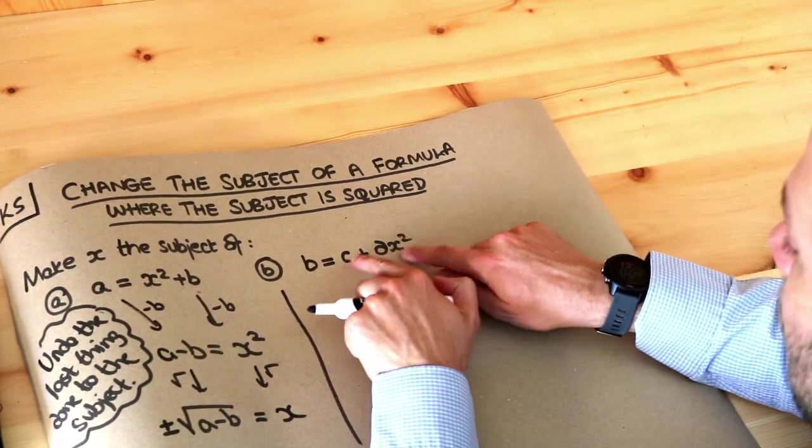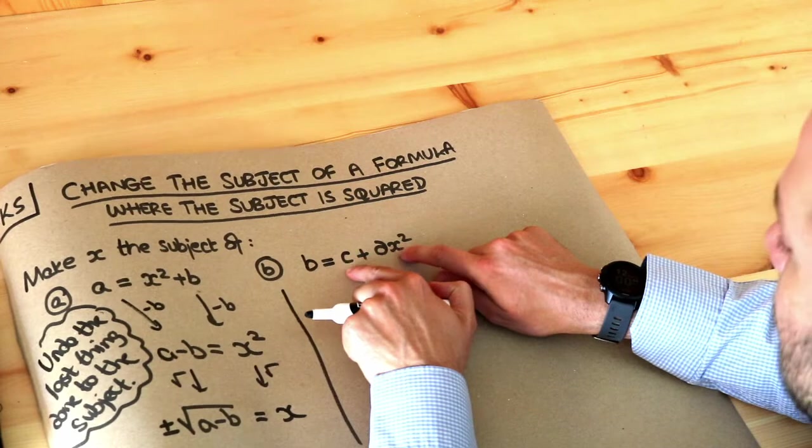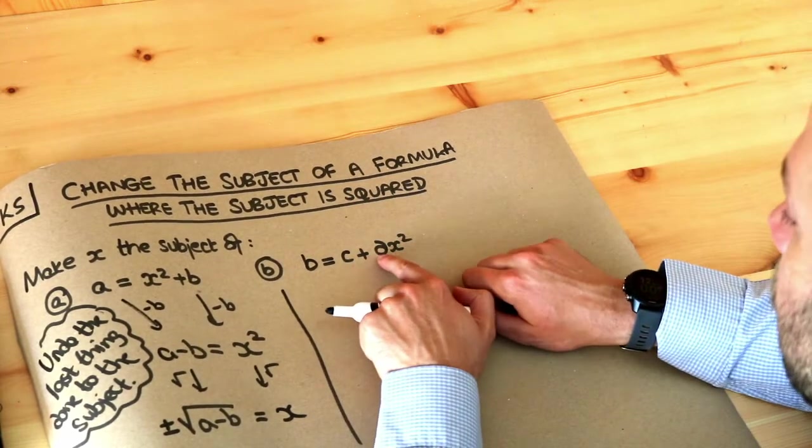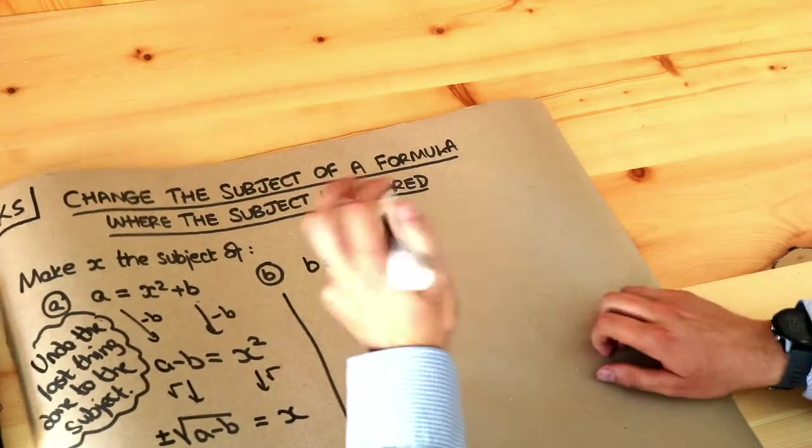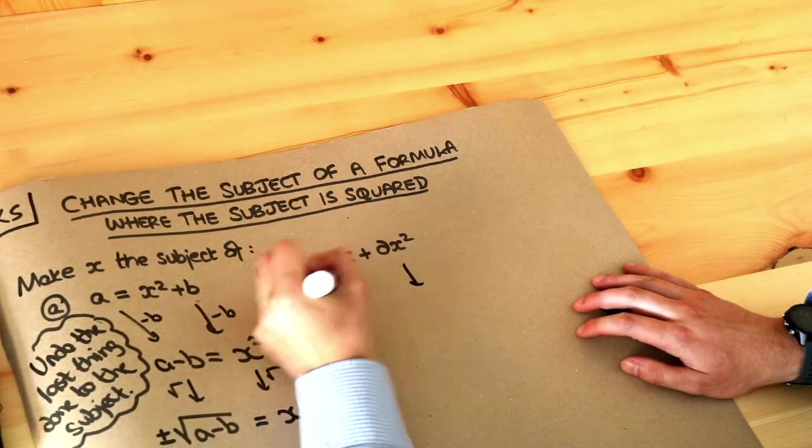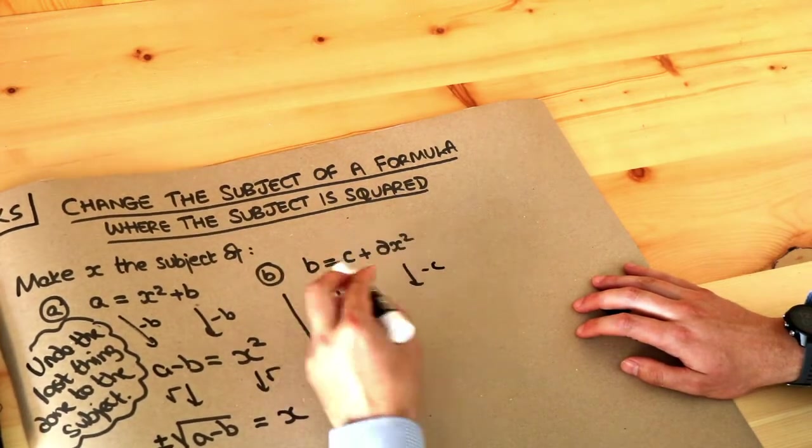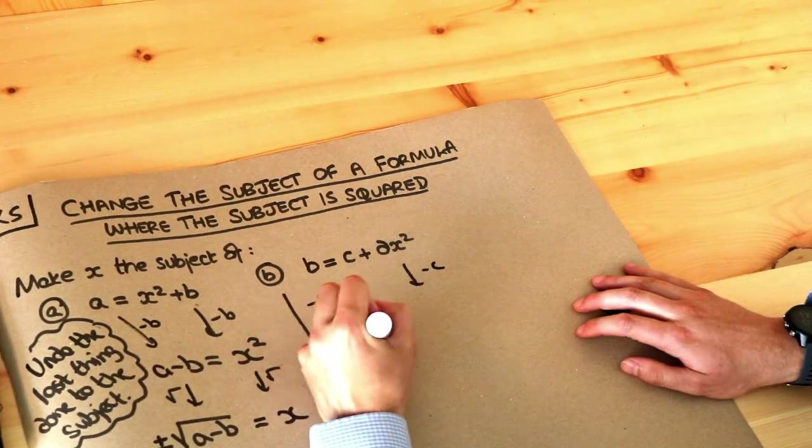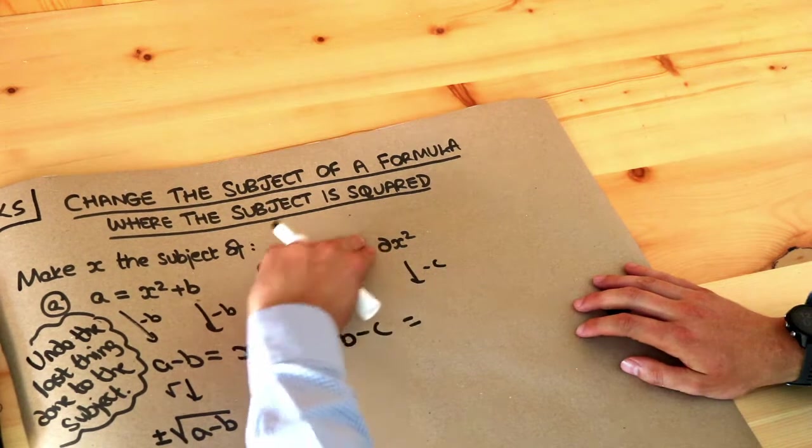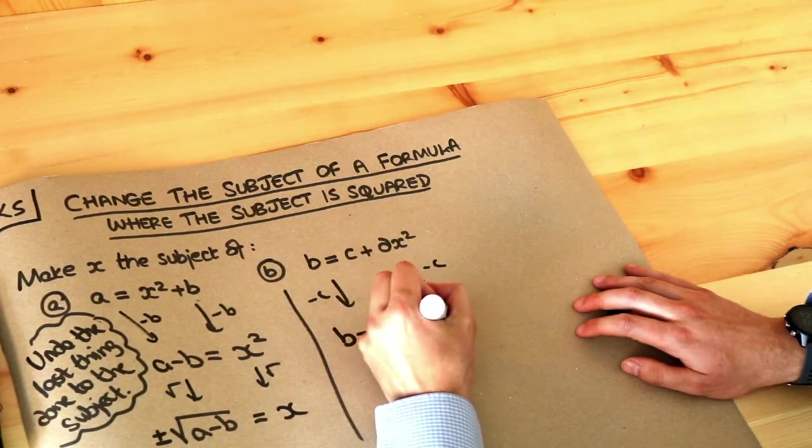This addition, remember, is we're adding these two things together - the c and the dx squared are being added together - so the last thing we did was add the c. So we undo the add c by subtracting c from both sides, so that becomes b minus c, and the minus c gets rid of that add c there, leaving just dx squared.